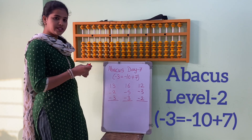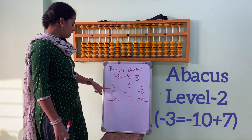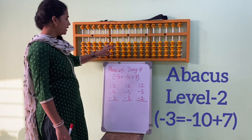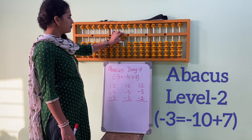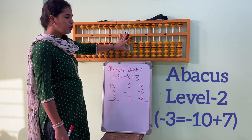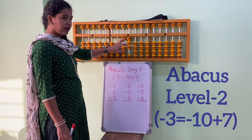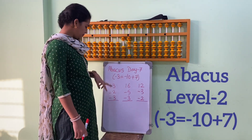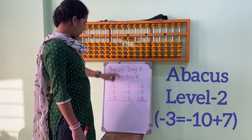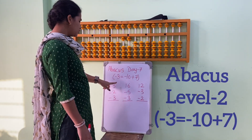Let's see the very first sum. The very first number is 13. 1, 2, 3. 1, 3, minus 2. 1, 2, now minus 3.